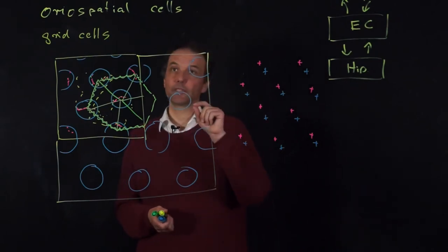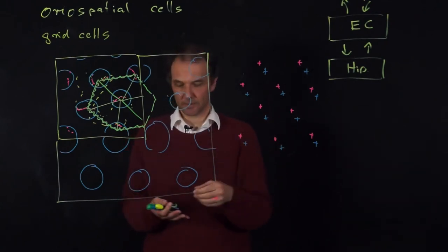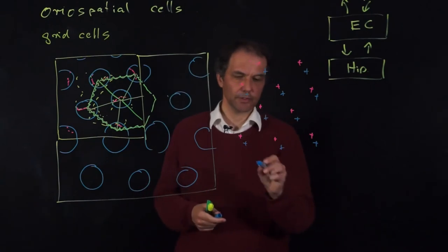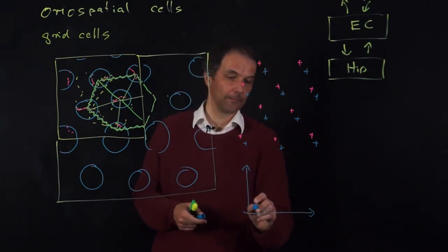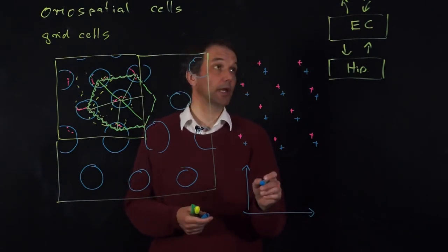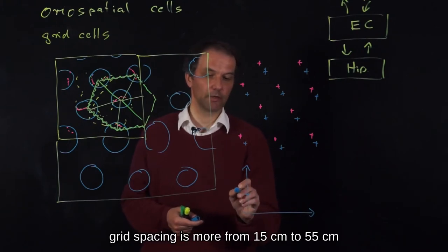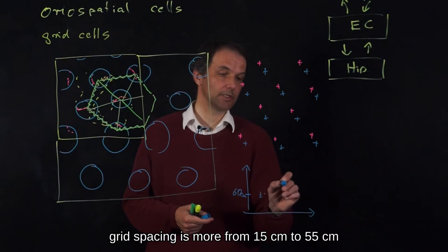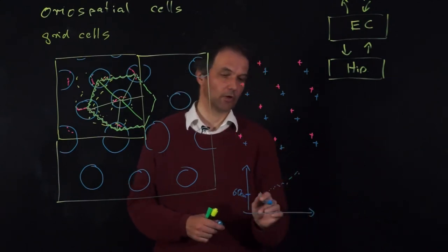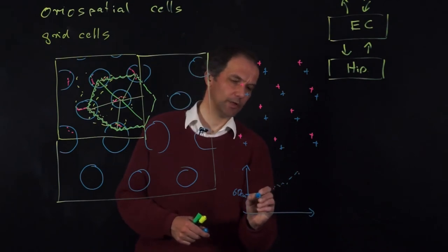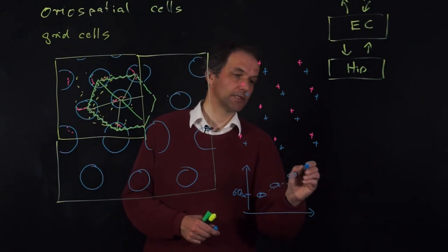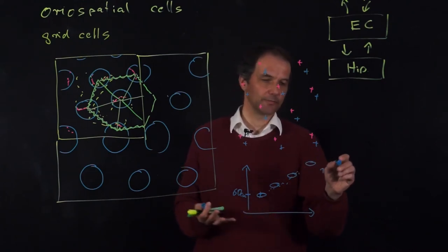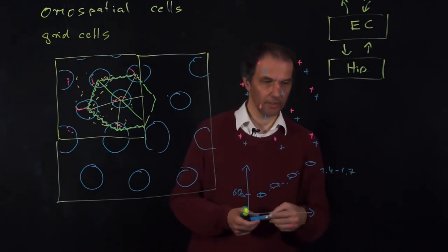If you record from grid cells farther away, you find different spacings. The spacing increases along the entorhinal cortex, and interestingly, the cells also form groups with discrete steps in which the spacing increases. The factor between spacings is roughly 1.4 to 1.7, depending on whom you ask.